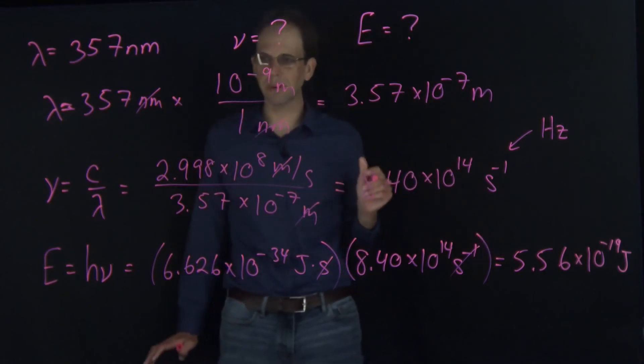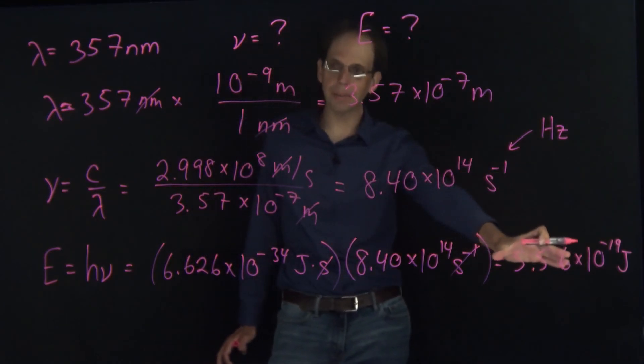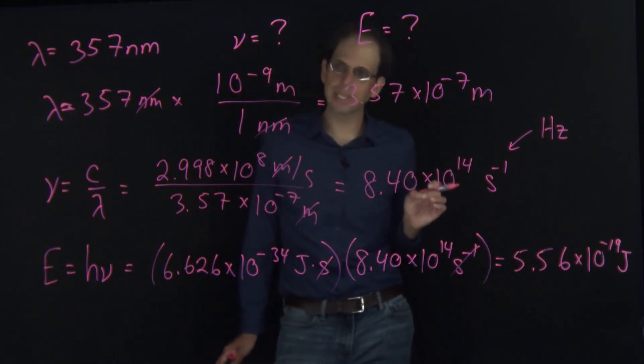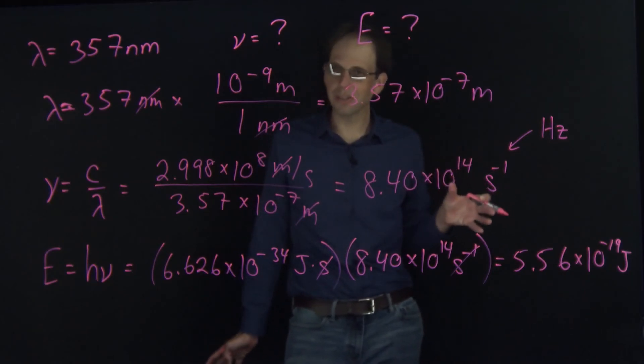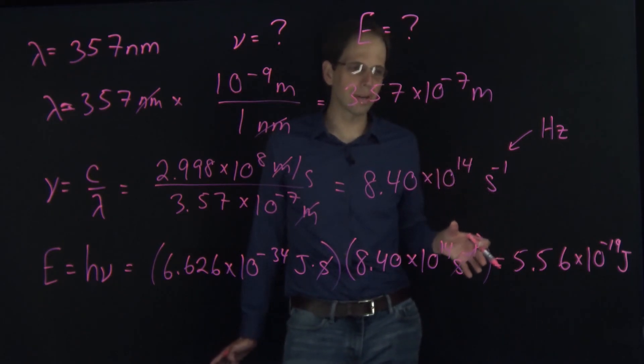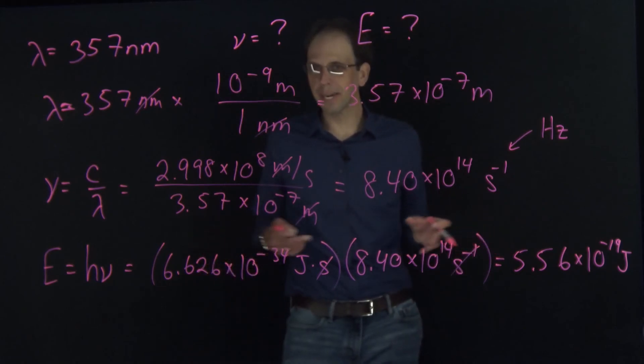This is the amount of energy per photon. Now, that is a tiny amount of energy, but that's just for a single photon. If you start thinking about Avogadro's number of those, 10 to the 23rd, then you could actually see this would be a sizable amount of energy.